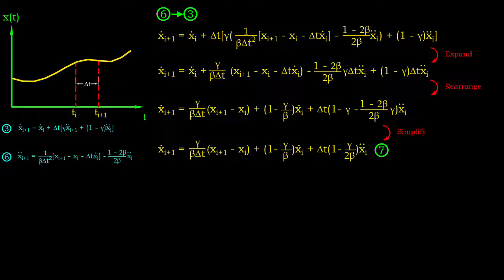Up next, let's substitute the acceleration solution into velocity solution. The purpose of this substitution is to remove the term acceleration at i plus 1 instance. Through a series of operations, an alternative form of velocity response is produced.